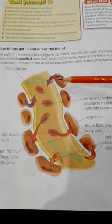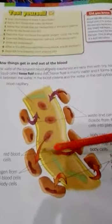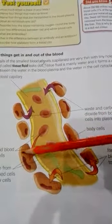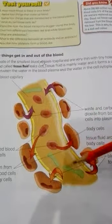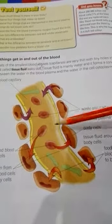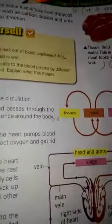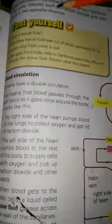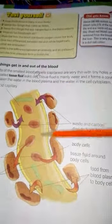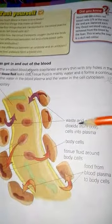The oxygen will move in the outward direction — from the red blood cells into the body cells. These are the body cells, this is the blood plasma, and waste such as carbon dioxide will move from the body cells into the blood plasma in the opposite direction. Oxygen and food in the tissue fluid diffuse from the blood to the cells, while waste such as carbon dioxide and urea diffuse in the opposite direction.